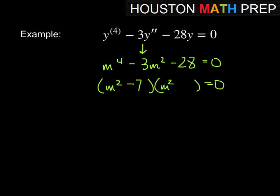m square minus 7 and m square plus 4 would give us that. And then we could go ahead and solve each of these. So if we have m square minus 7 equal to 0 and we have m square plus 4 equals 0. So over here, m is equal to plus or minus the square root of 7. And then on this one, m is equal to plus or minus 2i.